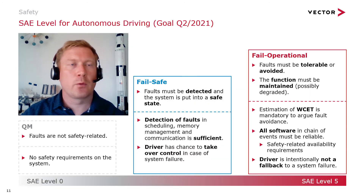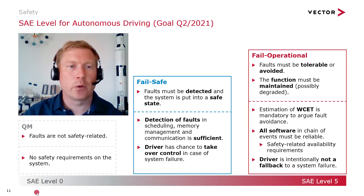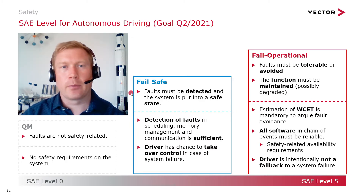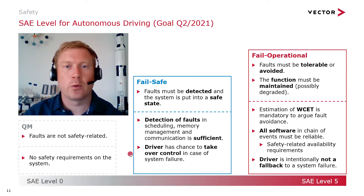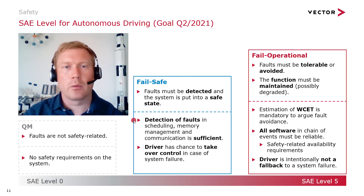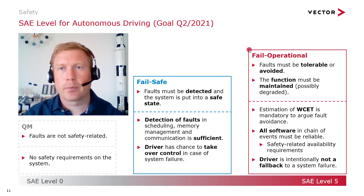One big driver for safety is autonomous driving. The SAE has different levels to rate the capability of a self-driving vehicle. SAE Level 0 is basically a QM stack — faults are not safety-rated and there are no safety system requirements. In the middle we have the fail-safe topic: the driver must take over immediately in case of a system fault. The system must be able to detect faults and hand over to the driver — faults must be detected, not necessarily avoided. On the other hand, in fail-operational scenarios, faults must be tolerable or avoided.